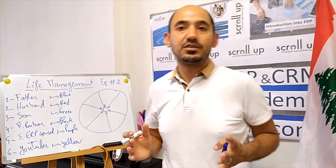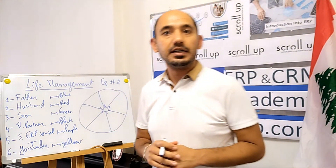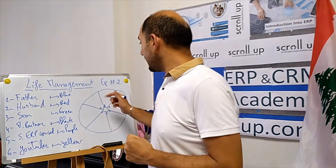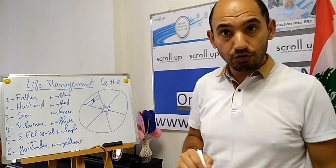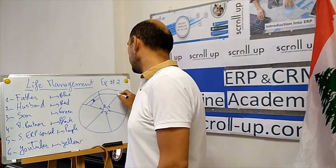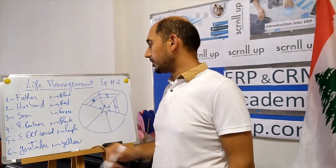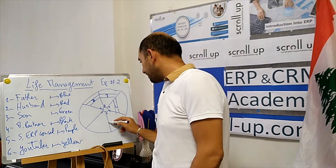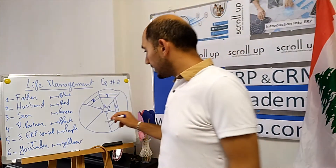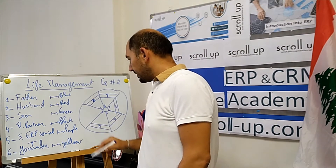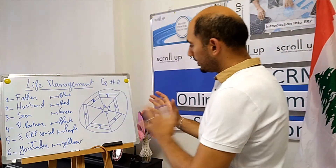For each role, you put your rating from one to ten — how do you feel you're doing in that role. When considering balance in life management, ask yourself: am I giving good time to my daughters, am I giving them quality time? For me, I rate myself eight as a father, eight as a husband, six as a son, seven as a partner, nine as a senior trainer, and nine as a YouTuber.